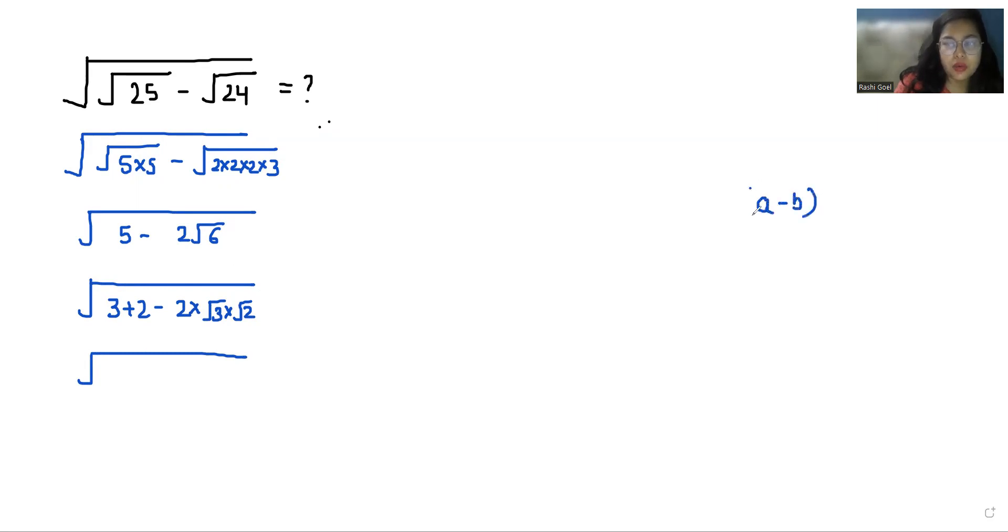Which is equals to a square plus b square minus 2ab. So 3 we can write this as root 3 square, similarly 2 as root 2 square.